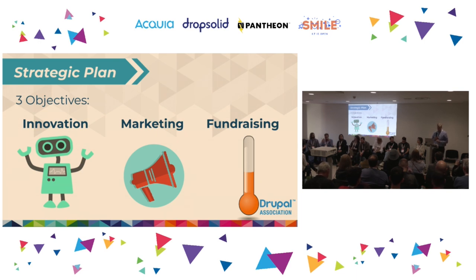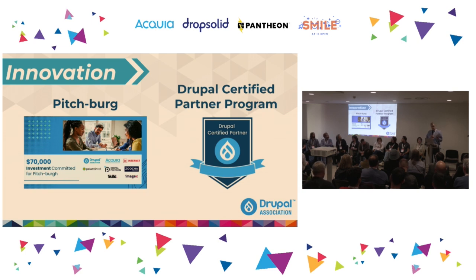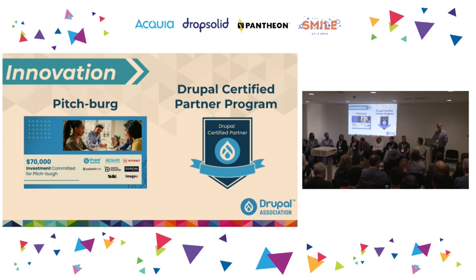It was back in June of this year that the board approved a new strategic plan during DrupalCon Pittsburgh in North America. It's a three-year plan with three objectives: innovation — Drupal becomes the most innovative, most impactful web platform in the world by promoting the open web; marketing — the Drupal brand is recognized globally as a platform of choice for ambitious end users in government, business, and beyond; and fundraising — the Drupal Association takes a leadership role in raising funds for community initiatives.